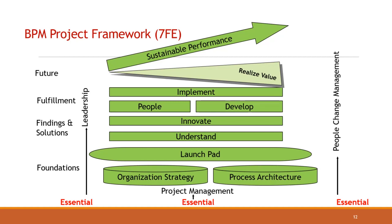Process architecture is the means by which organizations establish rules, principles, guidelines, and models for implementing BPM. The launchpad phase contains three major outcomes: selection of where to start the initial BPM project, agreement on process goals and vision once a process is selected, and establishment of the selected project. The understand phase is about understanding the current business process environment enough to enable the innovate phase, gathering basic process metrics to establish baseline costs for future comparison.